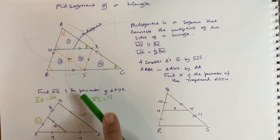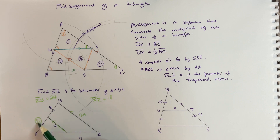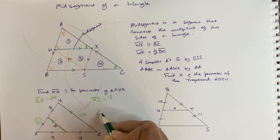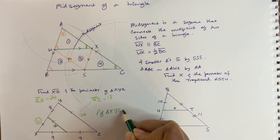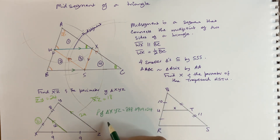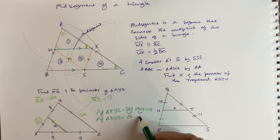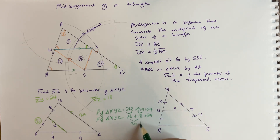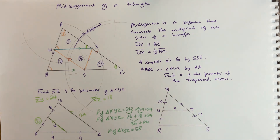Segment ZY is going to be 24 because it is twice the length of the mid-segment. Now it asks to find the perimeter. We know the perimeter is the distance around any figure. We have XY as 8 and 8, and 9 and 9. So the perimeter of triangle XYZ is 8 plus 8 plus 9 plus 9 plus 24 — that's 16 plus 18 plus 24, which equals 58 units.